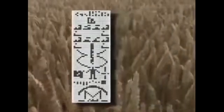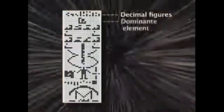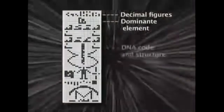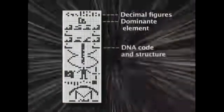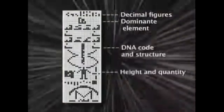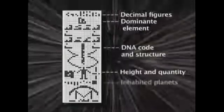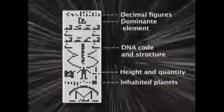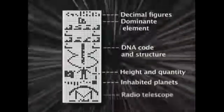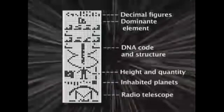Sagan's message explained our calculation system, the dominant chemical substances within the elements that create life on Earth, about our DNA code, humans' height and quantity, and that we live on the third planet in our solar system. And lastly, a sketch of our radio telescope.